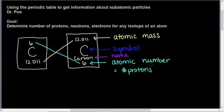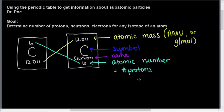So to summarize: atomic mass, symbol, name, atomic number. The atomic number equals the number of protons, and protons have a mass of 1 amu. The atomic mass units — or amus — are the units here, and as we'll find out later, this is also grams per mole. For now, we'll focus on atomic mass units. Of the subatomic particles, protons and neutrons have mass; electrons do not contribute significantly to the mass.